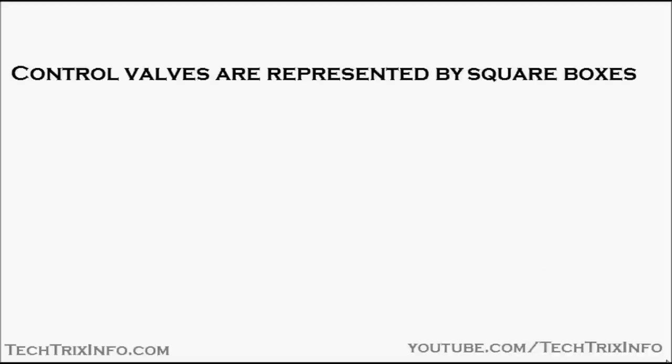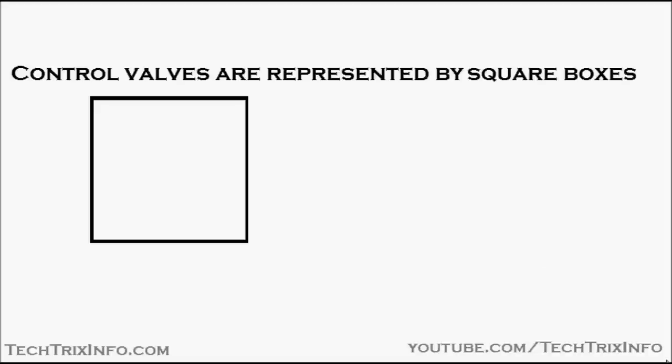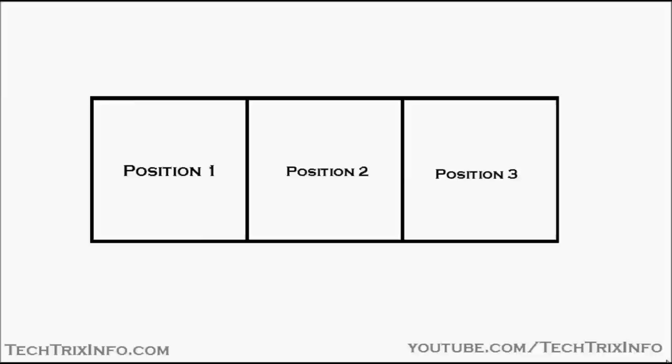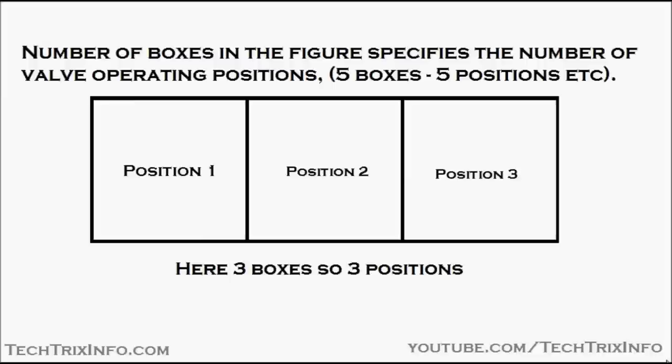Control valves are represented using square boxes. You can see the square boxes coming up — those are the square boxes used to represent the control valve. Each square box represents a position: position one, position two, and position three.